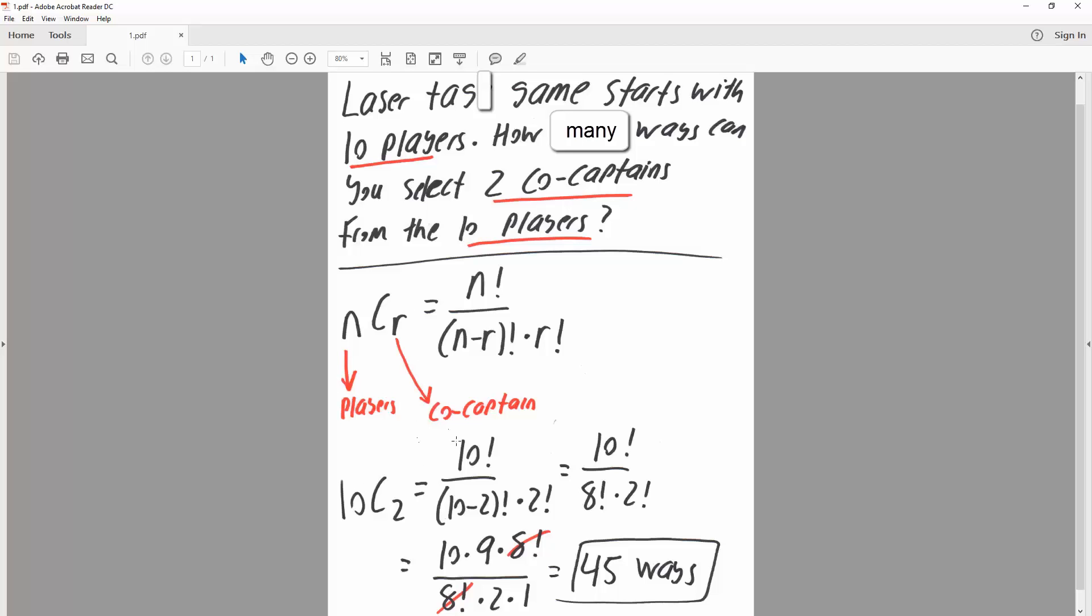So we get 10 factorial divided by parentheses 10 minus 2. 2 is R, so 10 minus 2 factorial times 2 factorial. So we get 10 factorial divided by 10 minus 2 is 8. 8 factorial times 2 factorial.